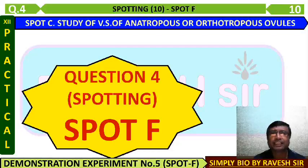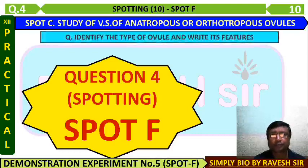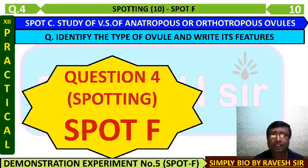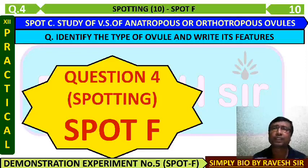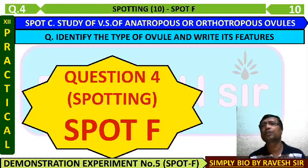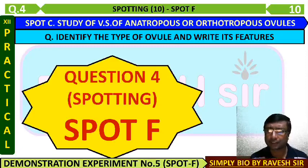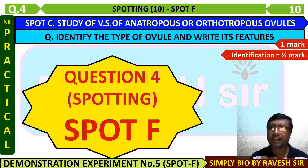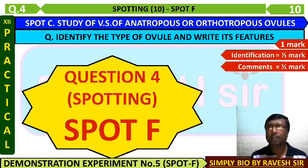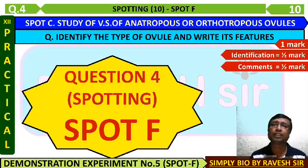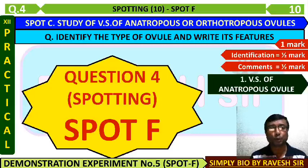Spot F involves the study of the vertical section (VS) of anatropos or orthotropos ovules. The question asks you to identify the type of ovule and write eight features — about four or five points about the ovule. Anatropos and orthotropos are opposite characters and easy to distinguish. Half marks are for identification and half marks for writing at least four correct related points.